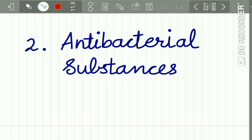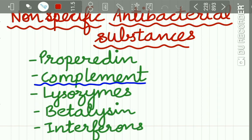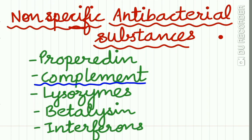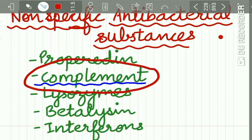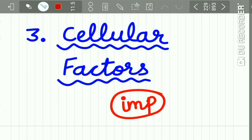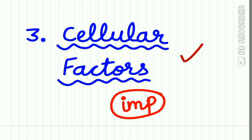The second mechanism of innate immunity is the secretion of antibacterial substances. There are certain non-specific antibacterial substances present in tissues, which include properdin, complement, lysozymes, beta-lysins, and interferons. We will be having a separate lecture on complement, so we will study complement in detail later.